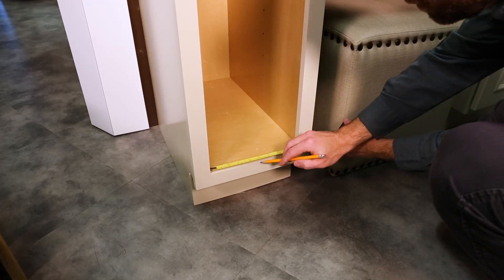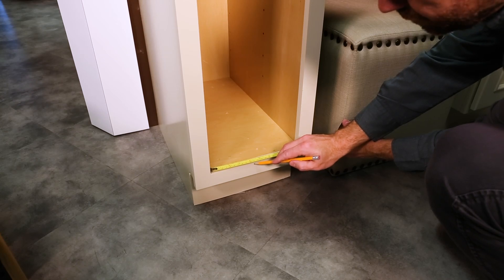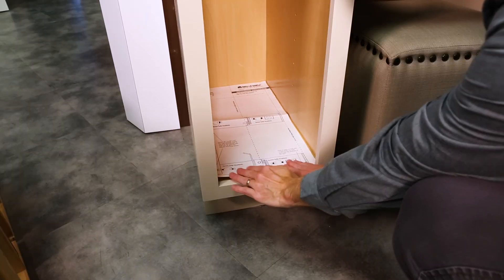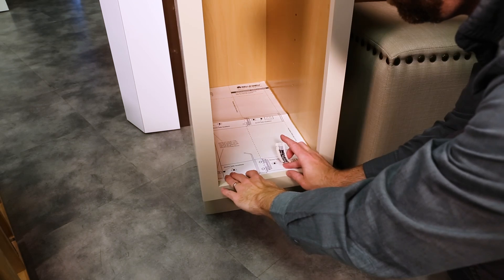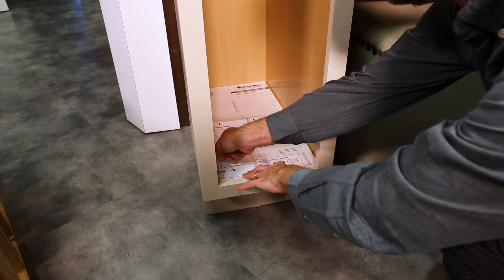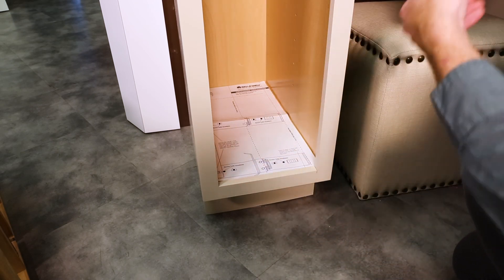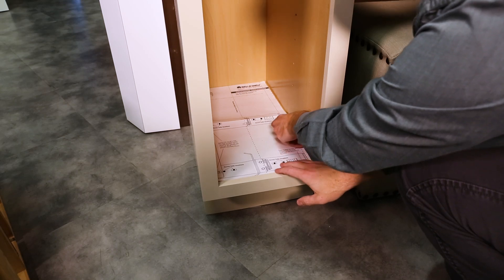Measure to find the center of your cabinet opening and gently mark with your pencil. Place the template inside the cabinet, align the center marks of the template to the center mark of the cabinet opening, and tape in place.